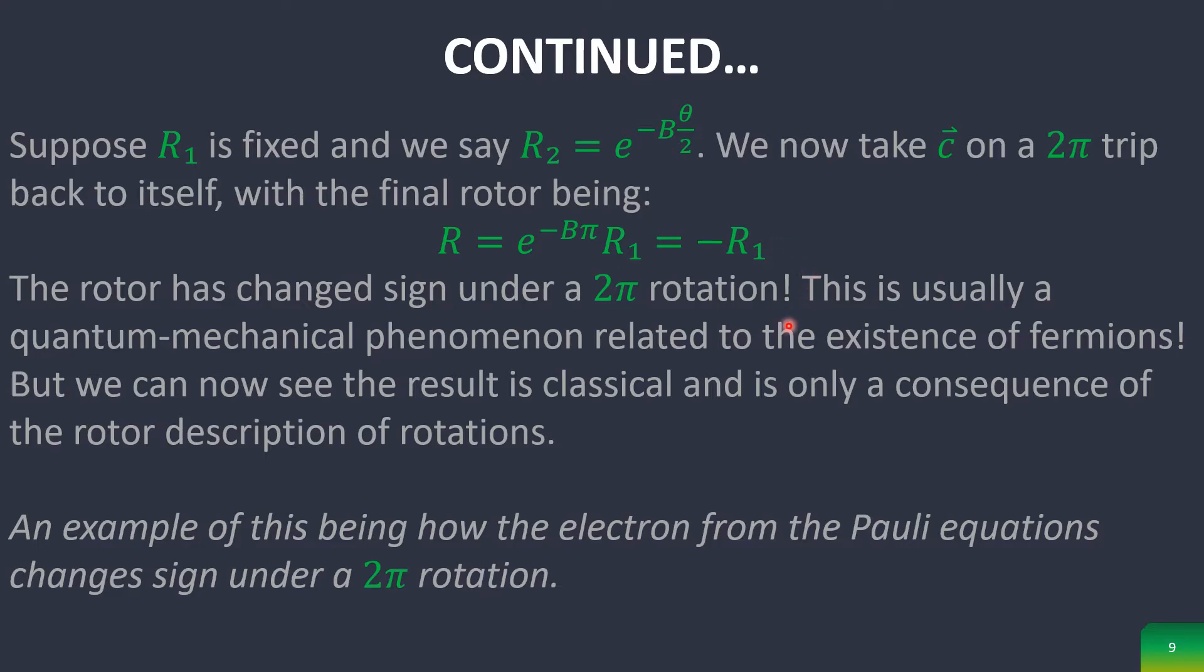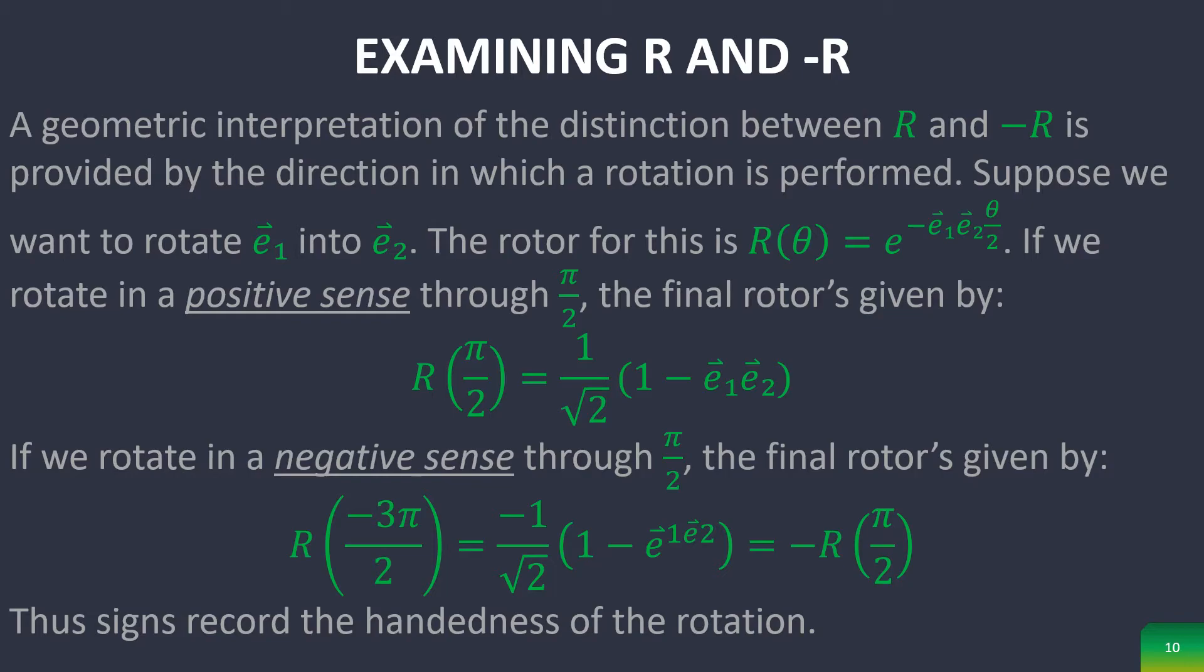An example of this happening in quantum mechanics is how the electron wave function from the Dirac equations changes sign under 2π rotations. Now the difference between R and negative R is only purely geometric.